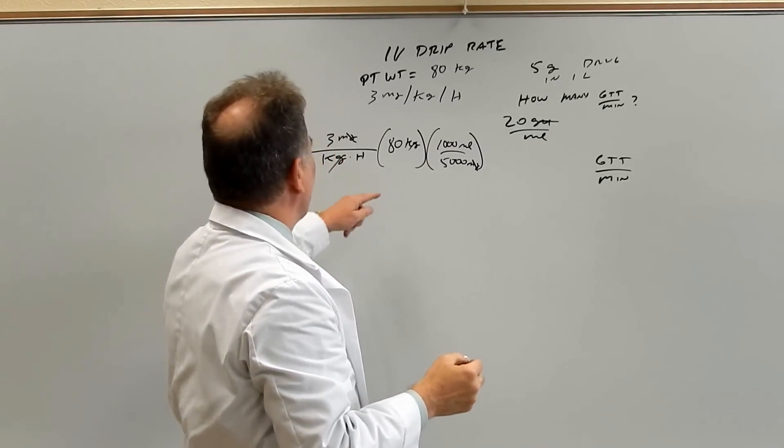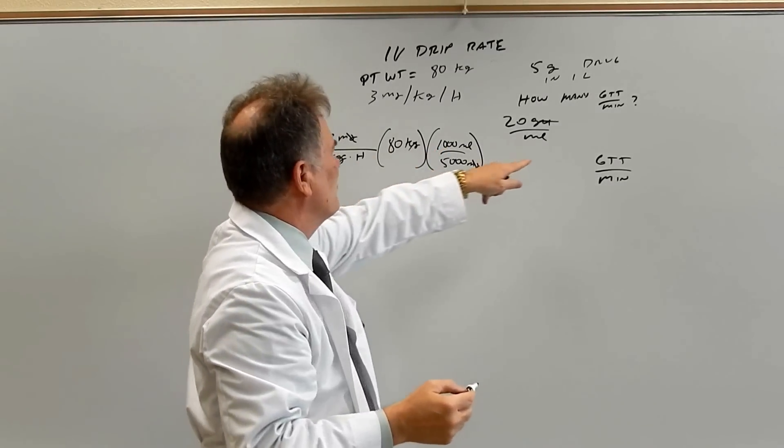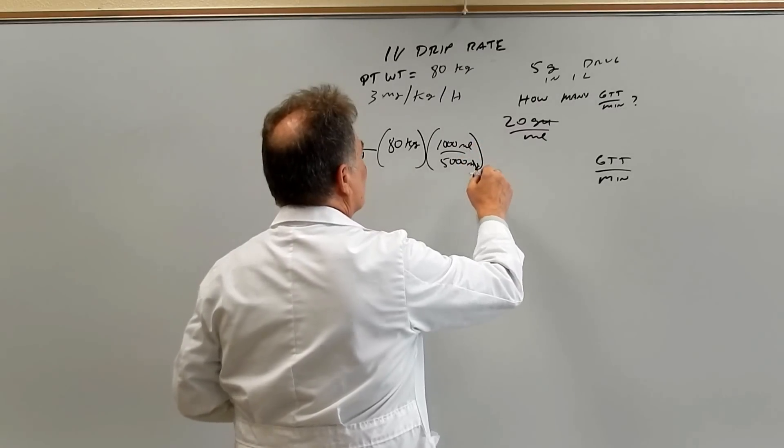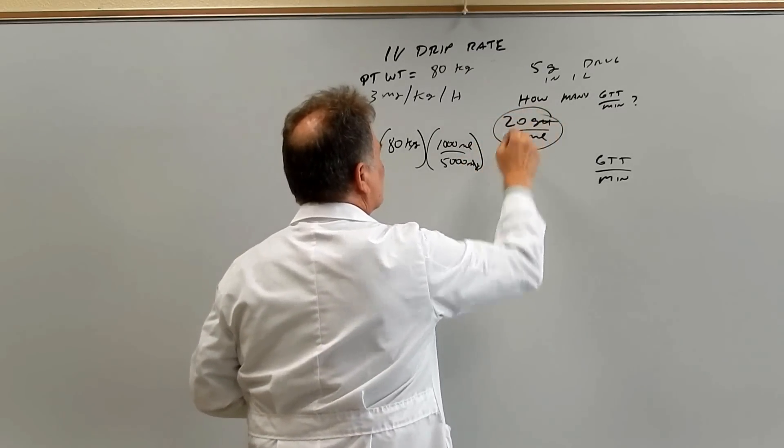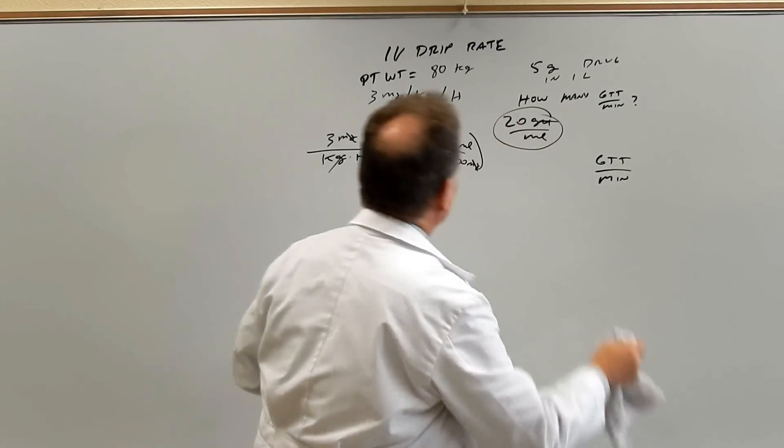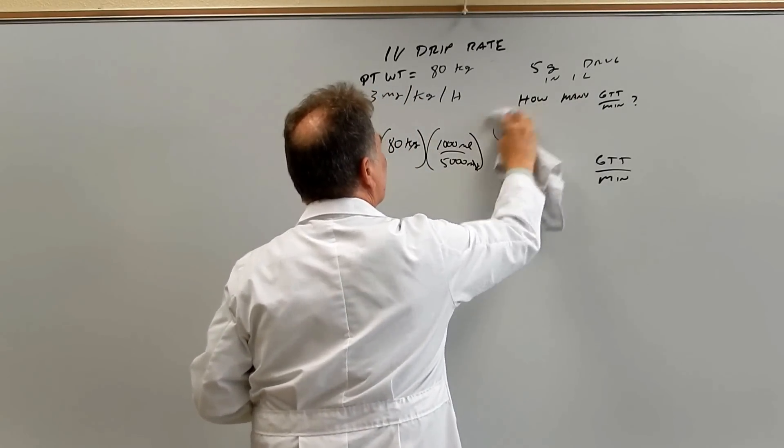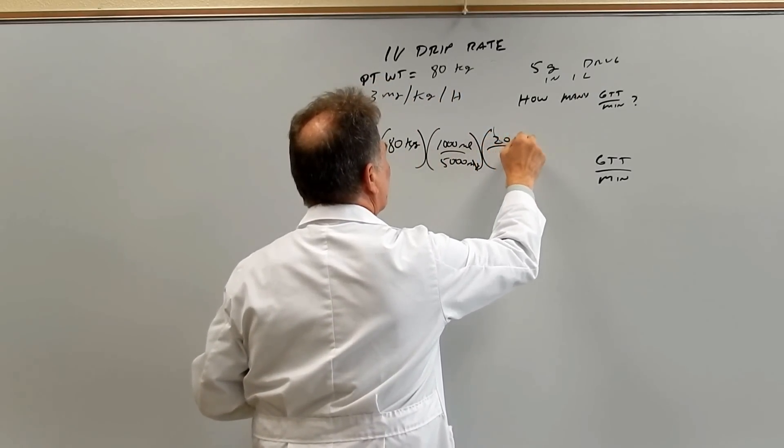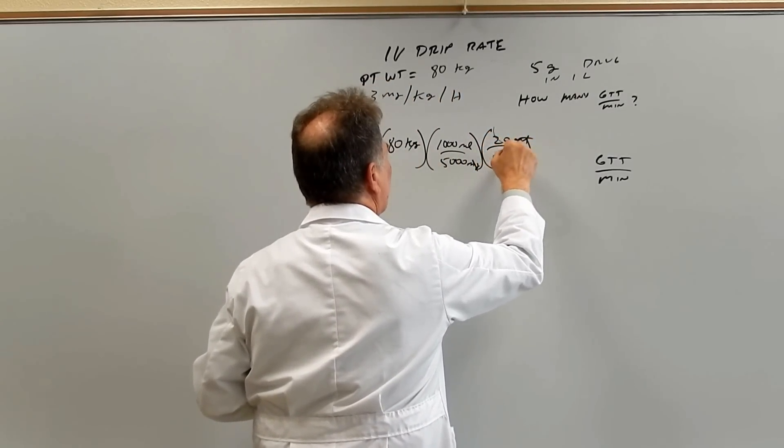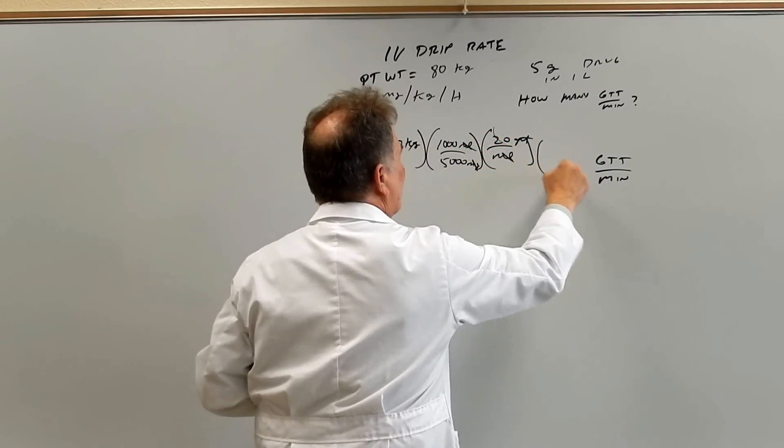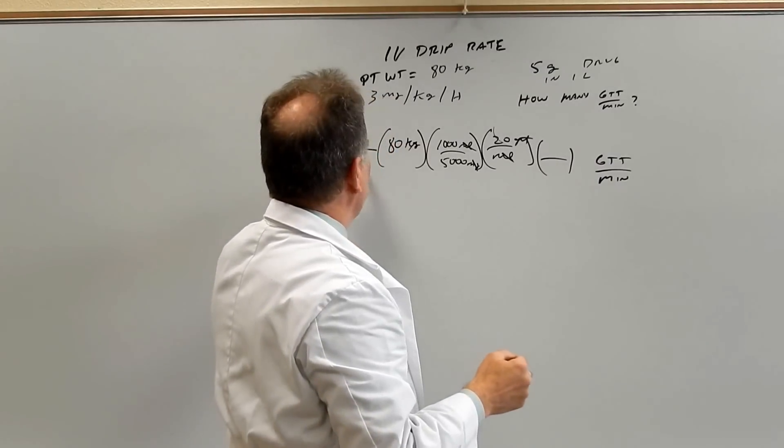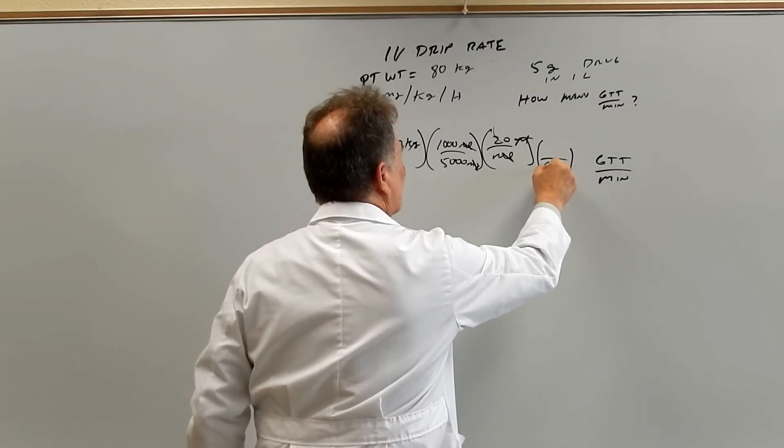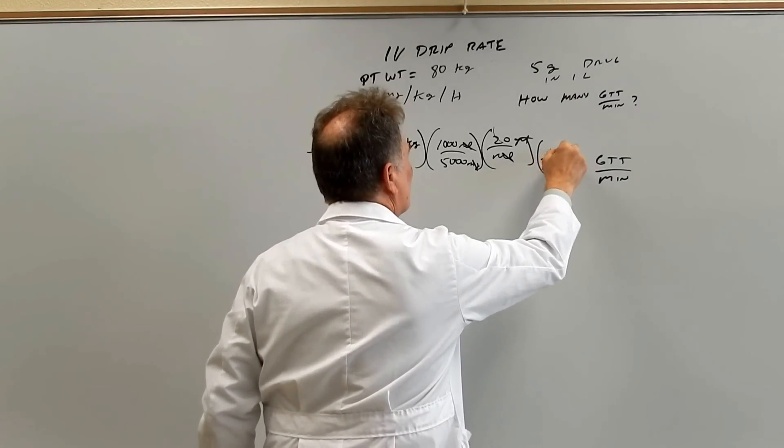Okay, so if we stop right now, we have mls per hour, but we need drops per minute. So let's go from mls to drops. And we're going to be using that right there, which is in the weight. So let's erase that. So 20 drops per ml. And we left the easy one for last. Let's change hours into minutes. So there's, of course, 60 minutes per one hour.